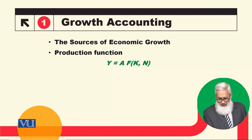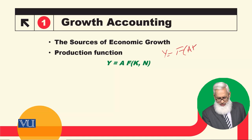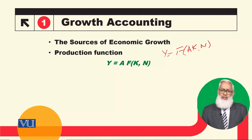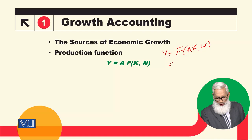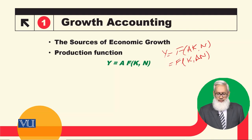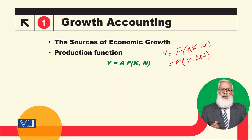And what would the other form be? That y is equal to f(A times K, N). These are the different ways of introducing technological advancement. But we will talk about this simple case in which any improvement in technology will affect labor and capital in an equal way.